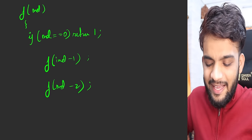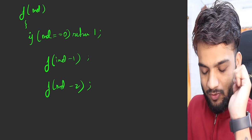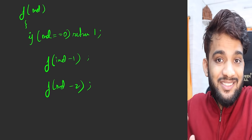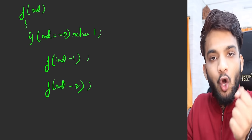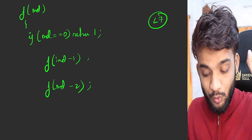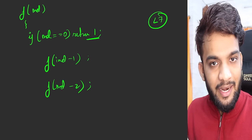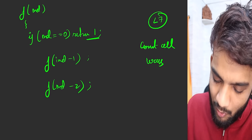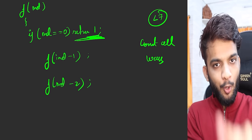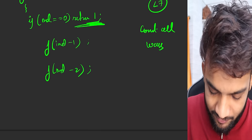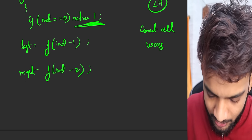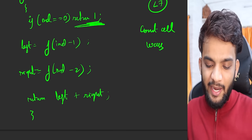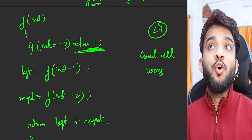Since we're counting all distinct ways, we sum the two recursive calls: F(index) = F(index-1) + F(index-2). Recursion will count all ways by going in depth and returning 1 at the base case — as explained in lecture 7 of the recursion playlist. So left recursion plus right recursion gives the total count. However, there is an edge case to handle.